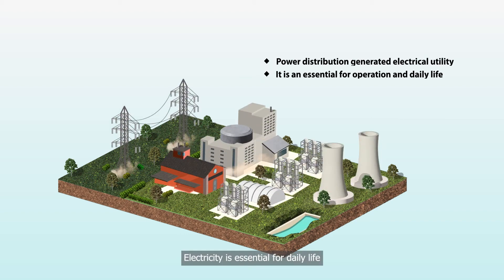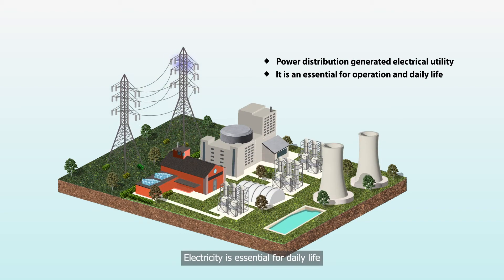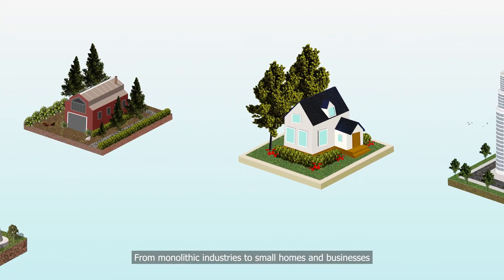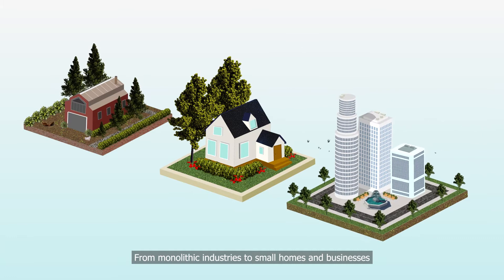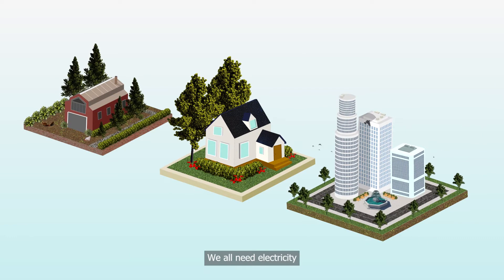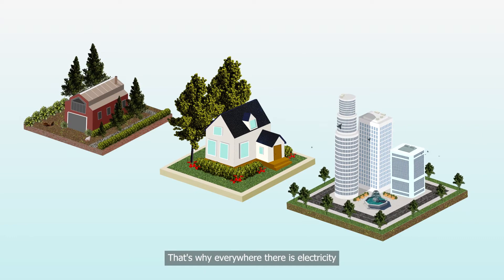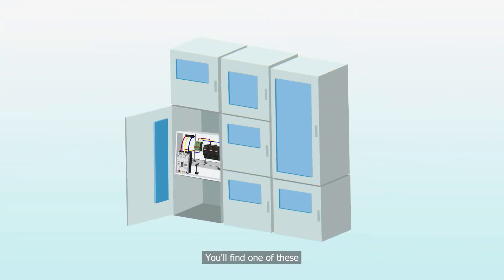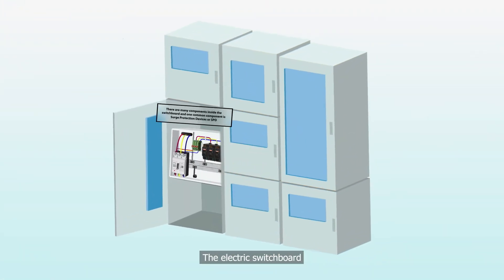Electricity is essential for daily life. Without it, life as it is wouldn't be possible. From monolithic industries to small homes and businesses, we all need electricity. That's why everywhere there is electricity, you'll find one of these — the electric switchboard.